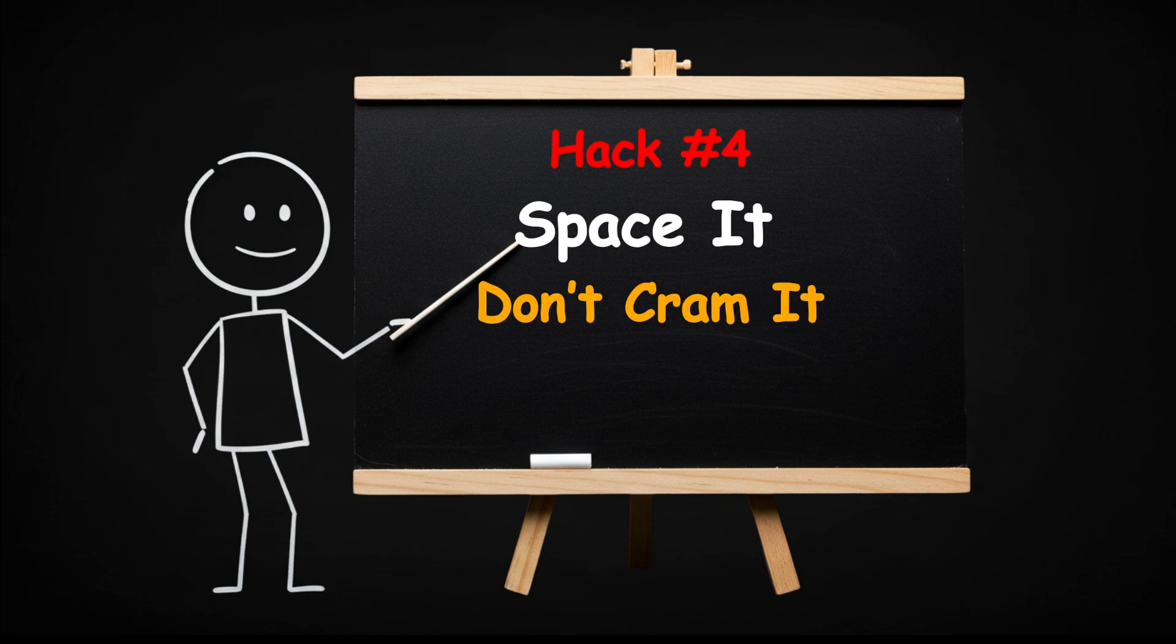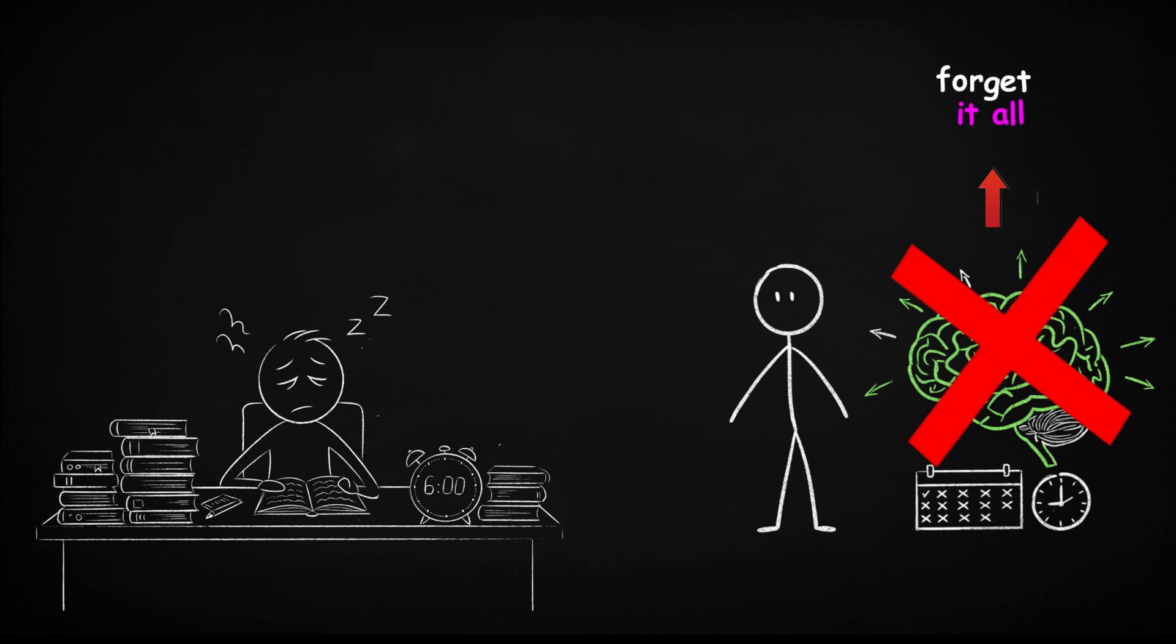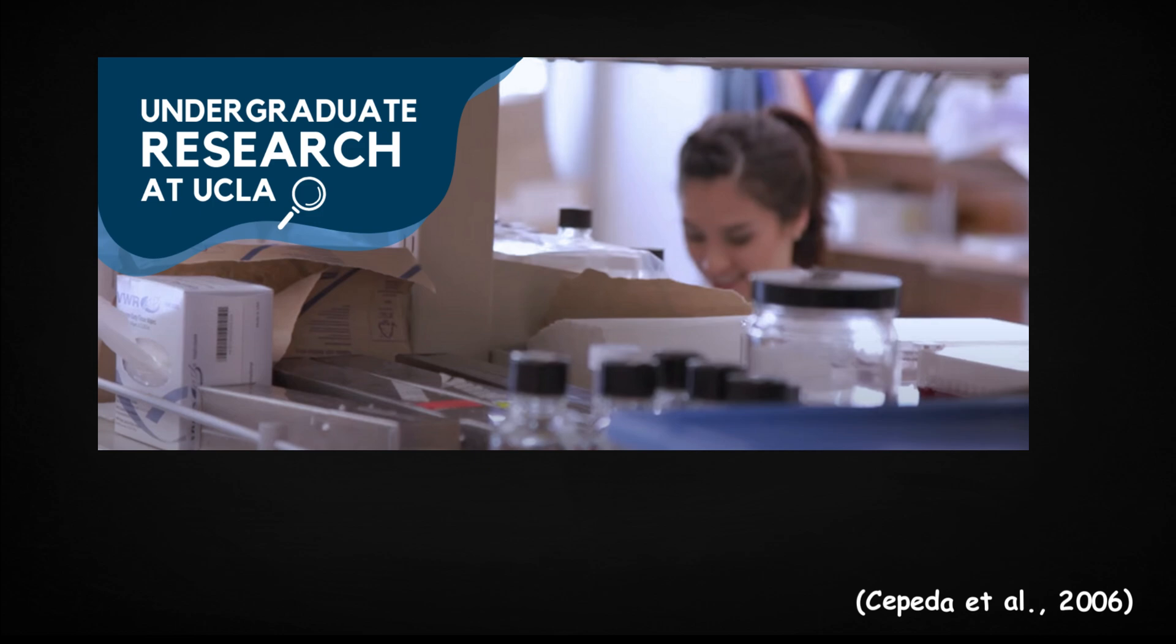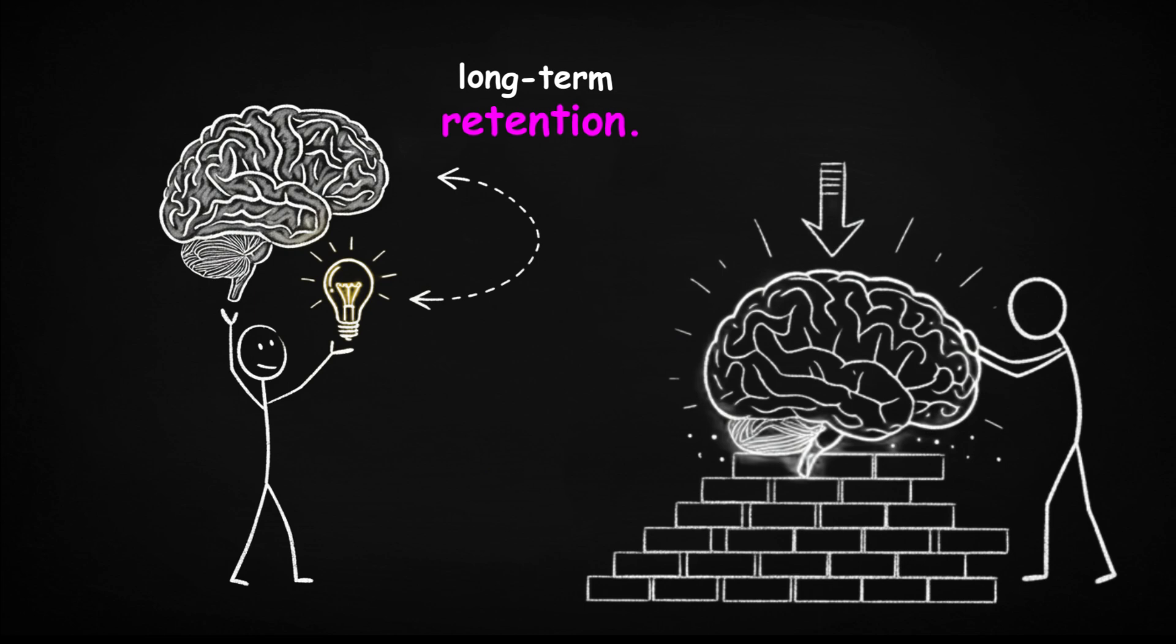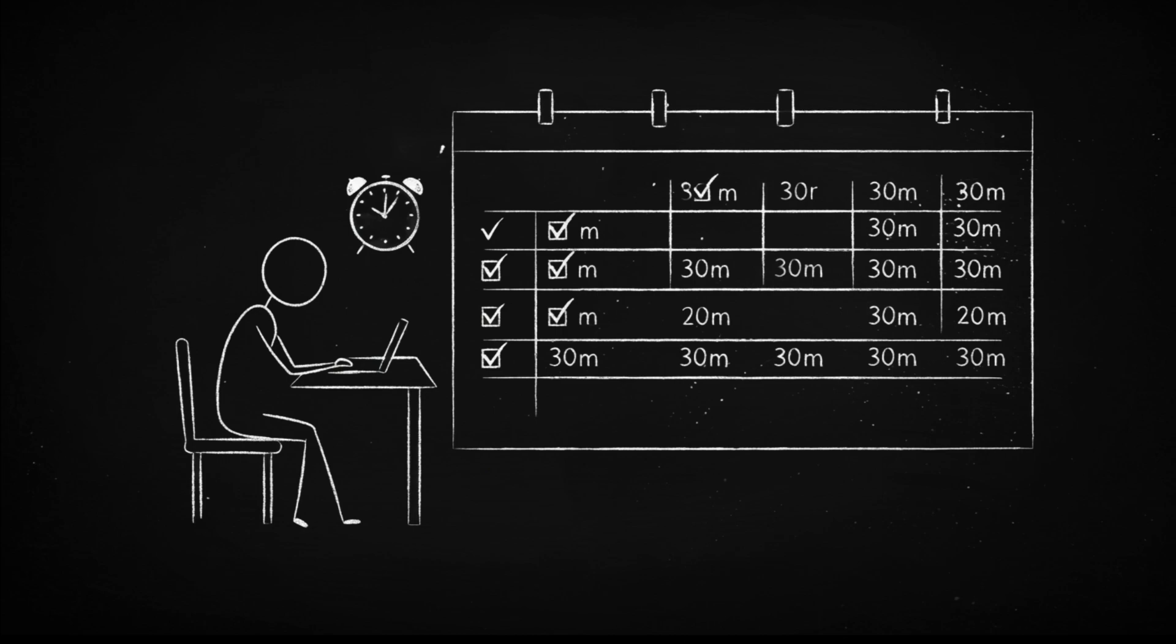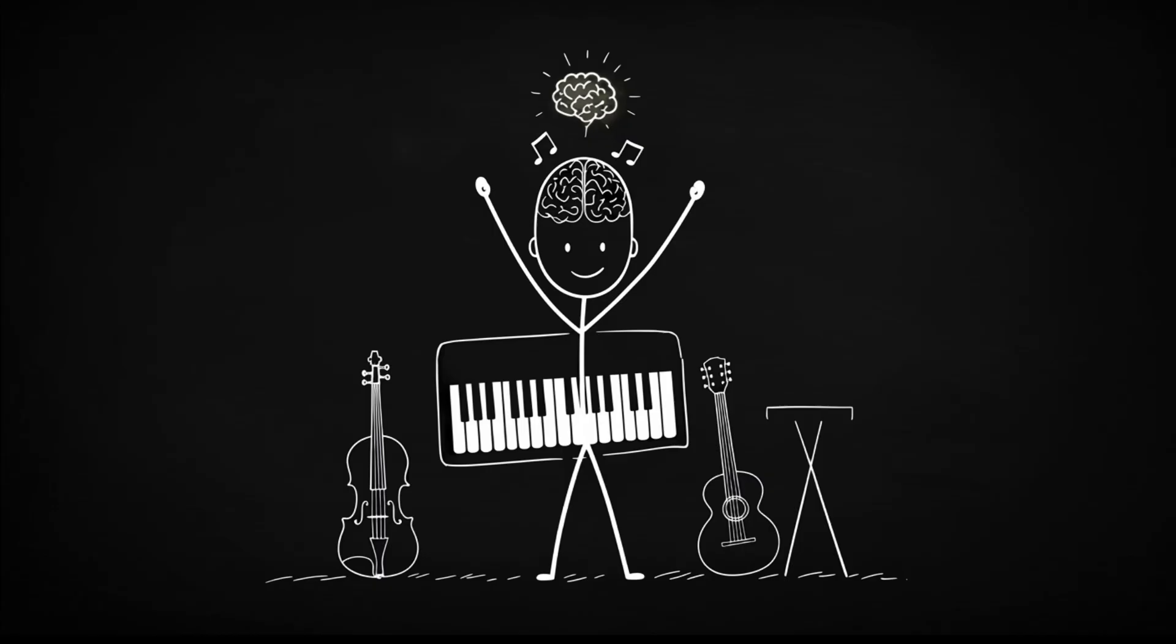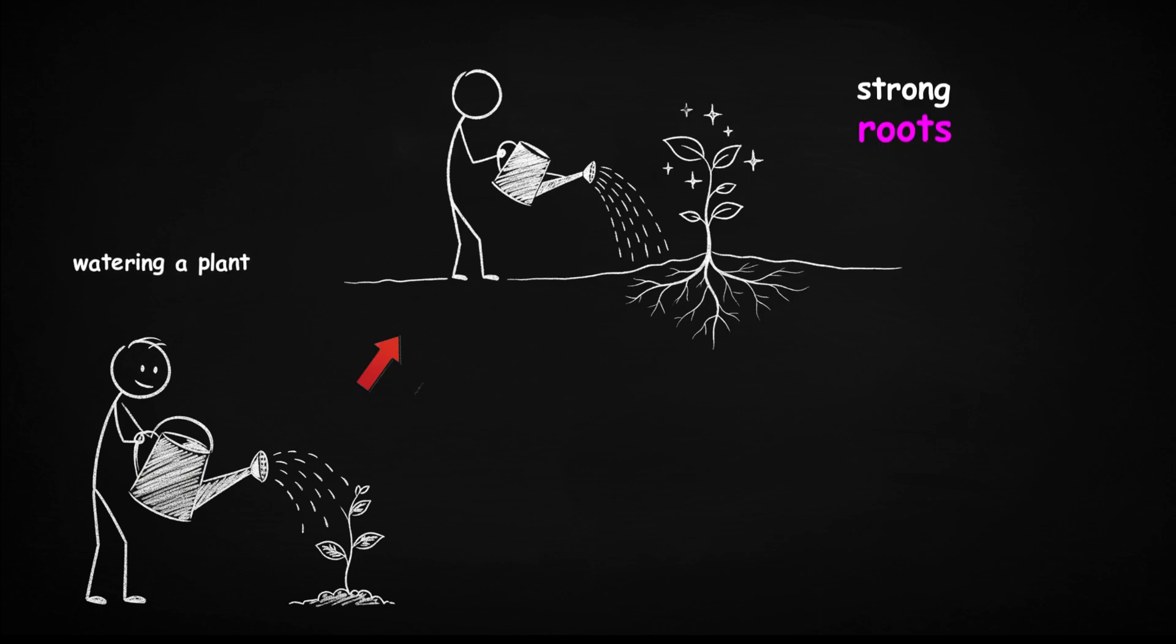Space it. Don't cram it. Cramming feels productive until you forget it all. Spaced repetition is your real superpower. Research from the University of California shows that spacing your study sessions dramatically improves long-term retention. Instead of marathon studying for six hours, break it into 30-minute sessions over a few days. Each time you revisit, you fight the forgetting curve and cement the knowledge deeper. Imagine watering a plant. A little water every day grows strong roots.